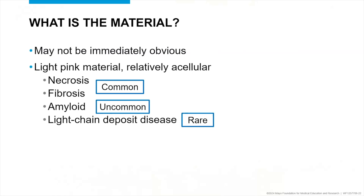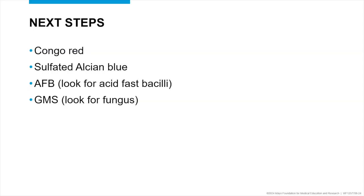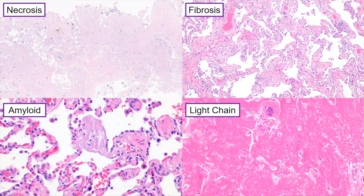When this case comes across my desk, I want to identify what that material is. There are other things we have to consider that are much more common than amyloid: necrosis, which looks similar but has more of a granular falling-apart appearance; collagen fibrosis, which is pink but you can see the collagen substructure; and then amyloid — with more of a cracked, almost sheet-like look. Very rarely you might also think about light chain deposit disease, which is very similar to amyloid but a little more eosinophilic.